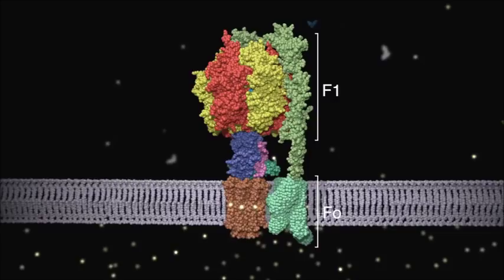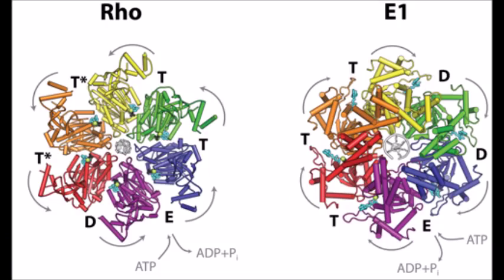Well, it would appear that the F1 and F0 subunits were independent parts that bonded together and gained new function. Even alone, both parts can perform functions. F1 can hydrolyze or break down ATP into ADP and phosphate ions, while F0 can transport protons. But where did the subunits originate?